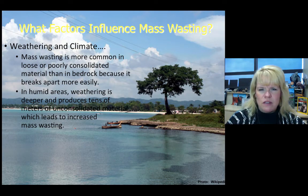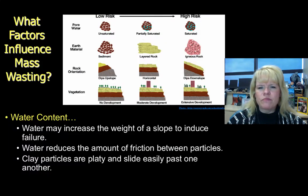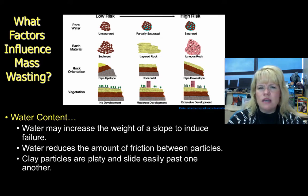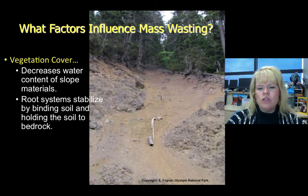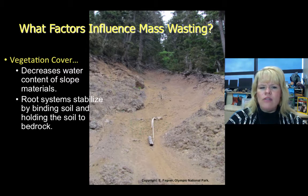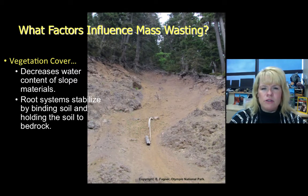A couple of factors influence mass wasting. Obviously climate does — the more humid the area, the more potential for degradation of rock, both by physical and chemical weathering. Water content is a huge component of mass wasting, especially soils and rock types that have very fine grain sediments that actually hold water and don't penetrate water well, like clays. If a slope's weight is filled with water, you have a chance for it to be overburdened and that weight can cause mass wasting to occur. When you remove vegetation either naturally or through man-induced construction, you run the risk of higher potential for mass wasting.